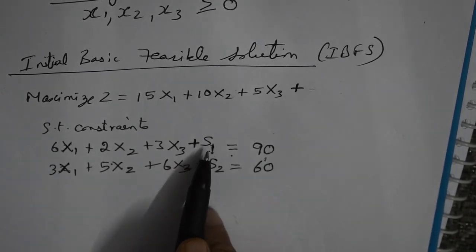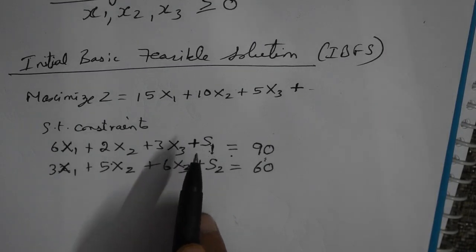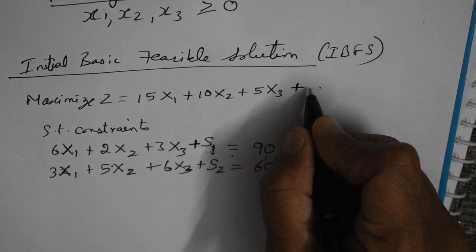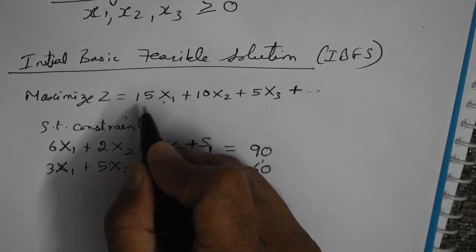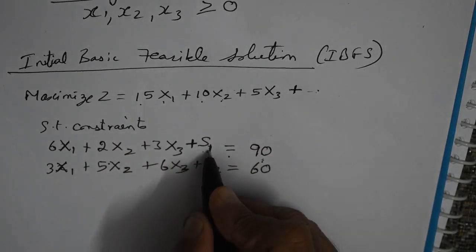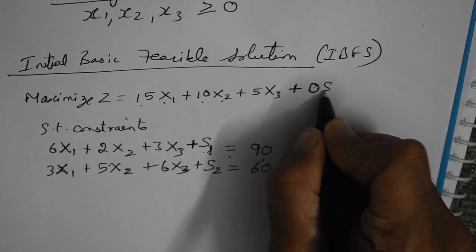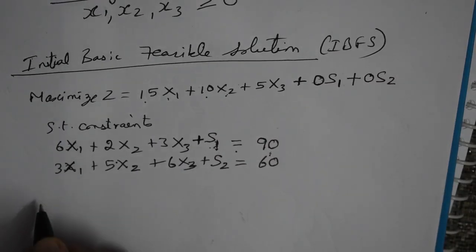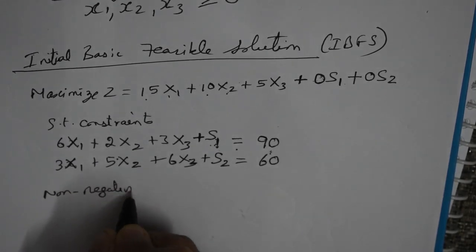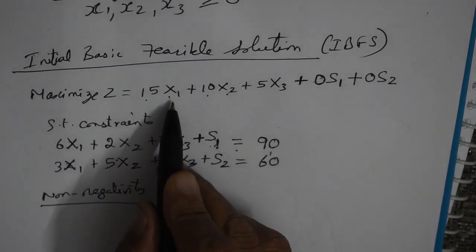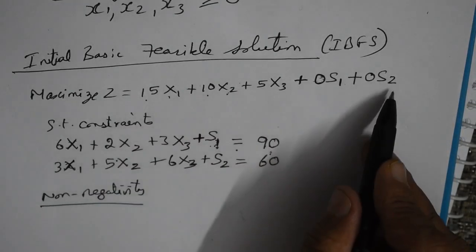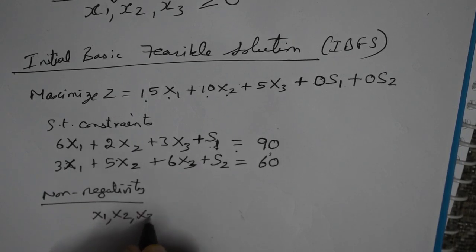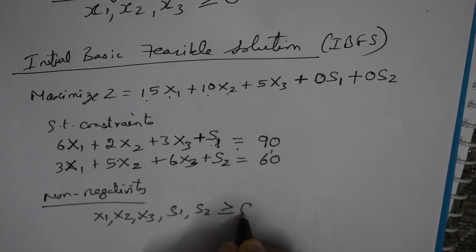We have introduced two slack variables, S1 and S2, which are the non-basic variables. These must also appear in the objective function. Since we do not sell the slack — it generates no profit or loss — its coefficient is 0. So S1 has coefficient 0 and S2 has coefficient 0. For non-negativity, all variables x1, x2, x3, S1, and S2 must be greater than or equal to 0. With this, the Initial Basic Feasible Solution is complete.